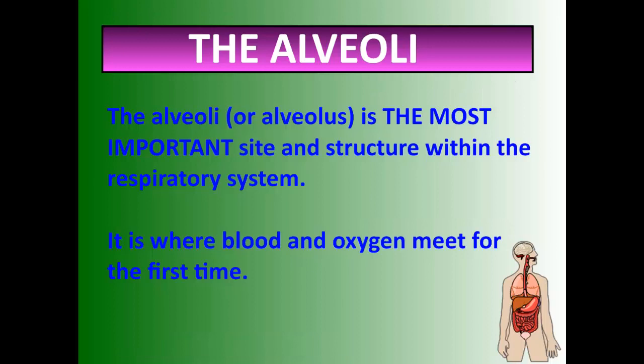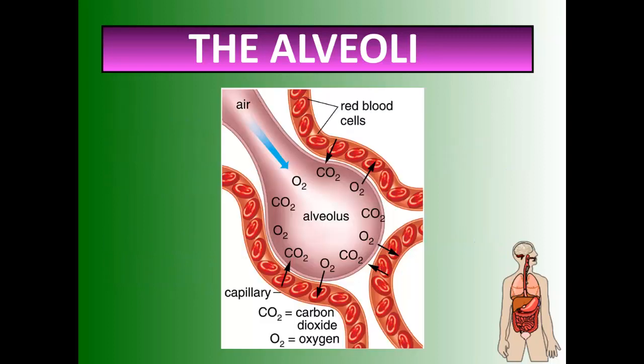What exactly happens in the alveoli? The alveoli — or alveolus if you have just one — is the most important site and structure within the respiratory system. This is where your blood and your oxygen will meet for the very first time, and where carbon dioxide will say bye-bye to the body.